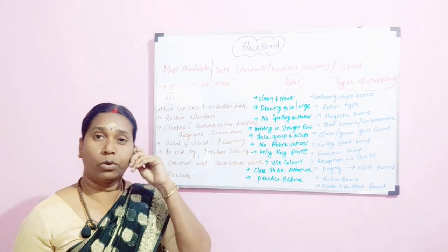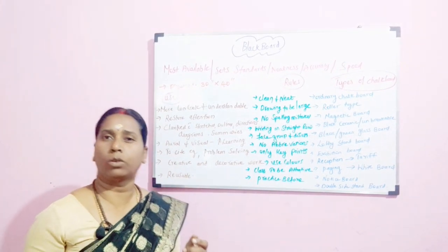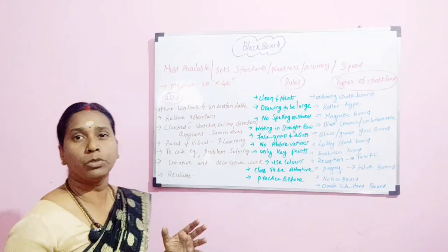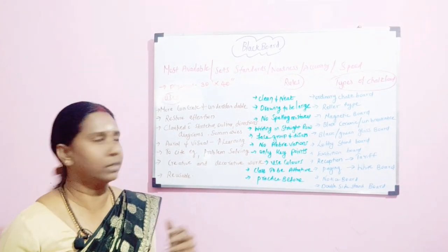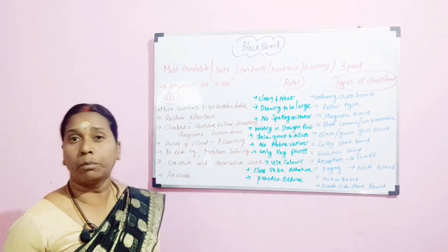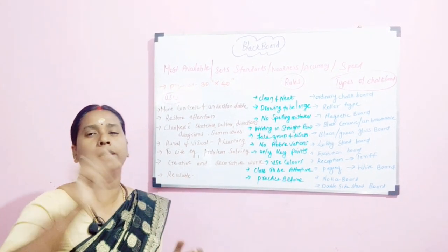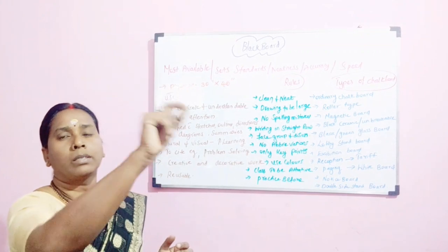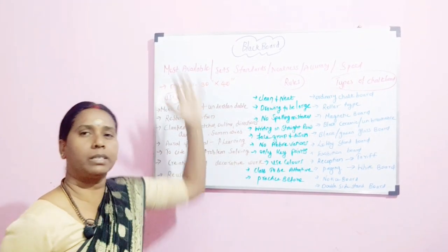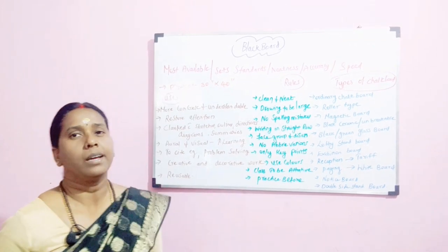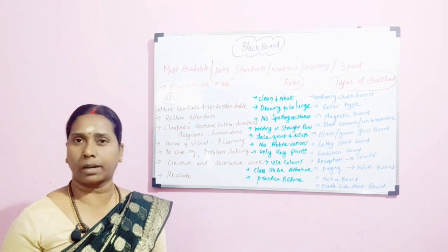And directions — how to show movement with arrow marks and all those things. And then diagrams: hearts, lungs, boy, girl — all those things you have learnt. And then summaries: whenever you finish a subject, the teacher will write the definition, the causes, the types, the signs and symptoms, management — everything quickly written on the board. This gives a consolidated idea about the class.